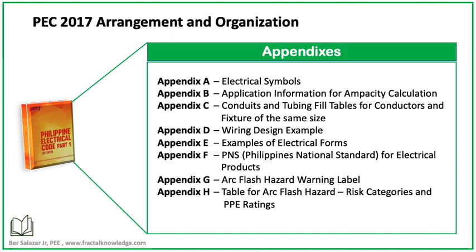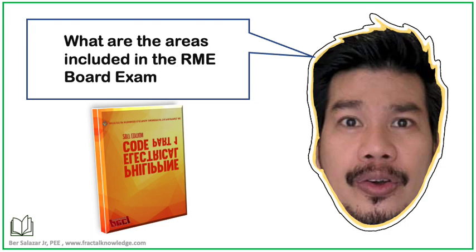Here is a description of the appendices. Appendix A is about electrical symbols, which is included in the RME exam. Appendix B is application information for ampacity calculation, also included in the RME exam. Appendix C is conduit and tubing fill tables for conductors and fixtures of the same sizes — some are included in RME exams. D is wiring design examples. E is examples of electrical forms. F is the PNS, the Philippine National Standard for Electrical Products. G is arc flash hazard warning labels — recommended labels. And H is the table for arc flash hazard risk categories and PPE ratings. You now have a general overview of how PEC is organized.